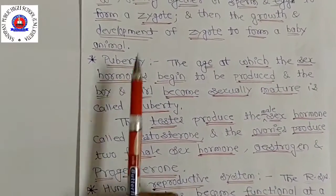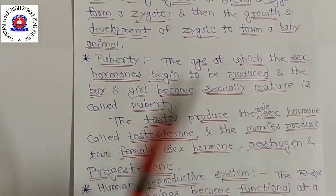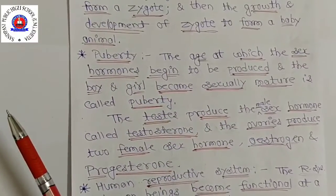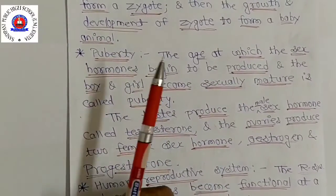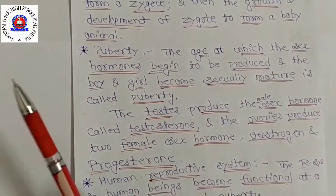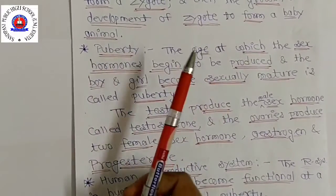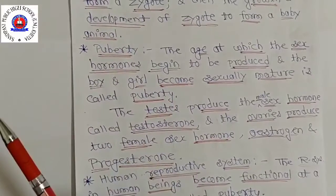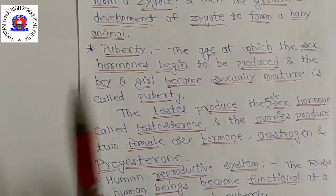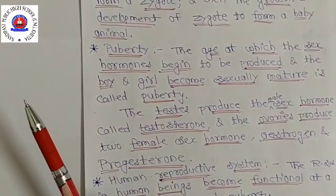The next topic is puberty. When a child is small, it can be difficult to tell from appearance whether it is a boy or a girl because small boys and girls have the same body shape. A time of rapid growth and body changes starts in the early teens, making boys and girls appear and behave differently. These changes start earlier in girls than in boys. We call the time between childhood and adulthood adolescence.